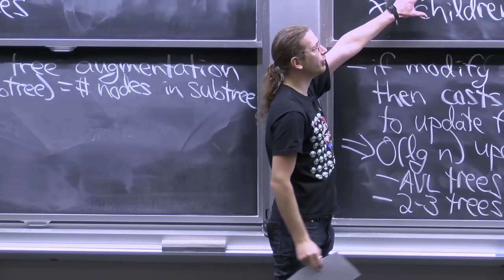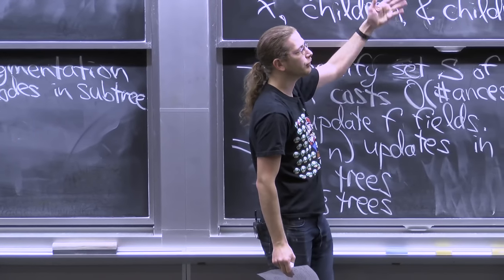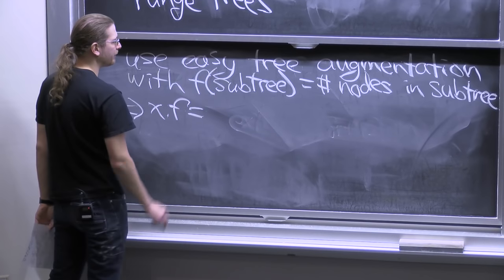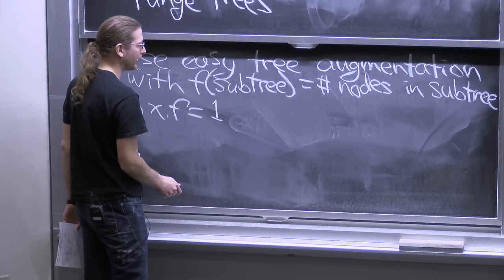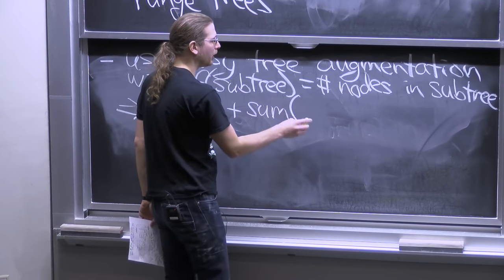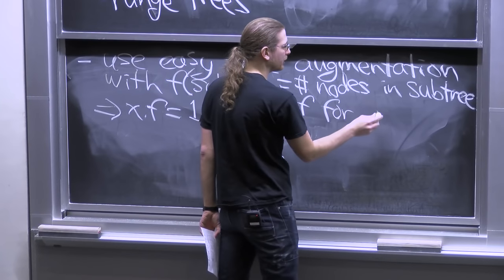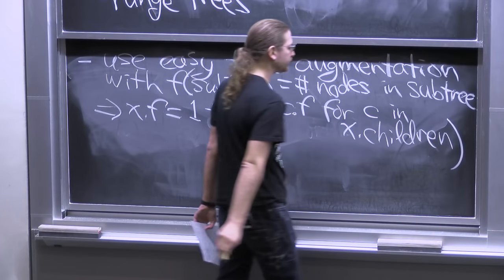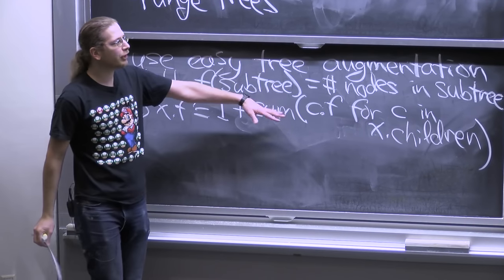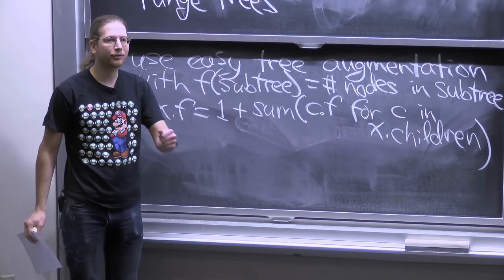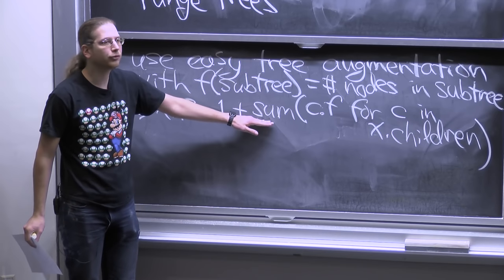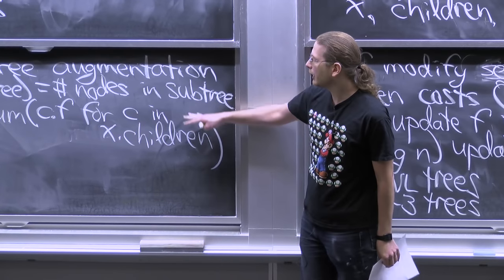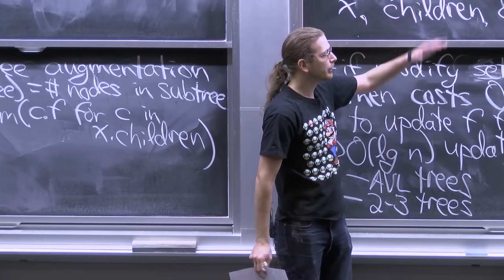For this augmentation to apply, we need to check that given a node x, we can compute x.size just using its children. This is easy — x.size equals 1 (for x itself) plus the sum of c.size for every child c. In a binary search tree, that's x.left.size + x.right.size. As long as there's a constant number of children, this takes constant time. So we satisfy the easy tree augmentation condition, and we now have subtree sizes.